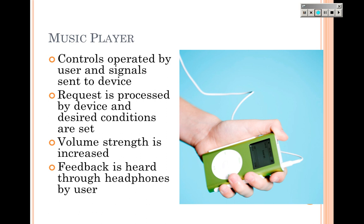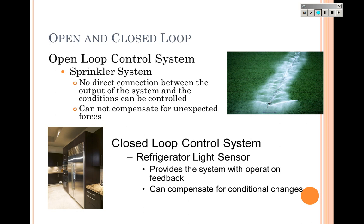Here's another closed loop example we all interact with — the refrigerator light. When you open the refrigerator door, the switch is released and the light comes on. When you close the door, the switch is depressed and the light goes off. Remember: the difference between open and closed loop control is feedback — closed loop has feedback, open loop does not.